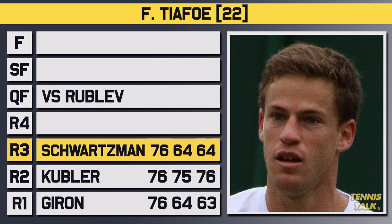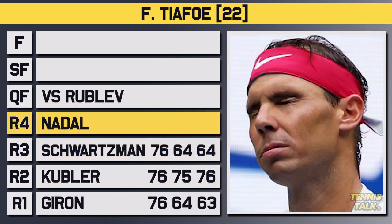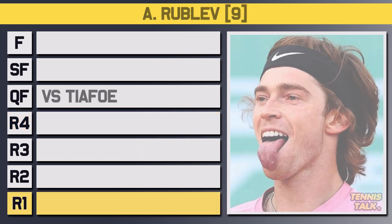In the fourth round, he'd take on the second seed Rafa Nadal, who had been a little patchy up to this stage. After splitting the first two sets, it was Tiafoe who got the win in the fourth, taking out Rafa in his biggest win of his career, 6-4, 4-6, 6-4, 6-3, to advance to his first US Open quarterfinal.